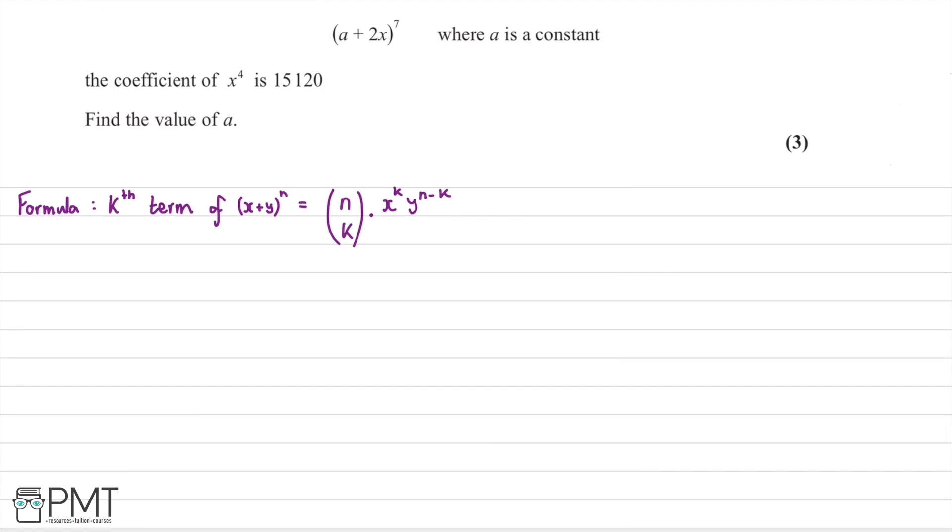For our case, we want to find the fourth term. Therefore we have 7 choose 4. For our x term, which is 2x, we have it to the power of 4, and then we have a to the power of 7 minus 4, which is 3.